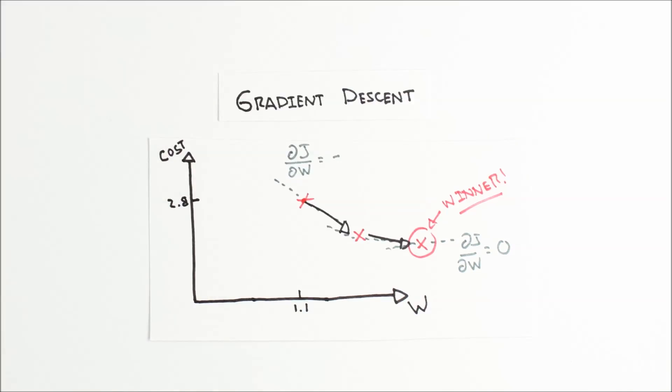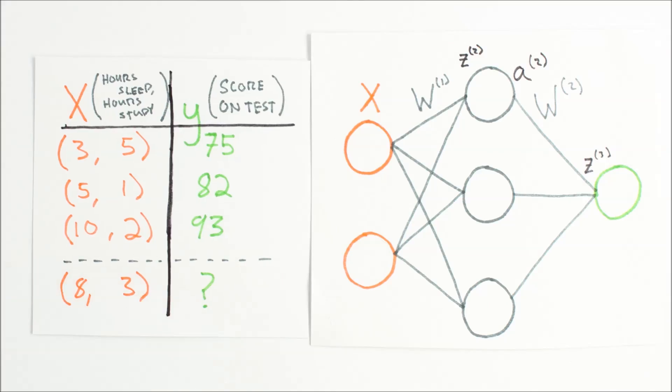Last time, we decided to use gradient descent to train our neural network so it could make better predictions of your score on a test based on how many hours you slept and how many hours you studied the night before.